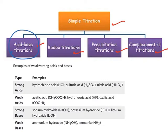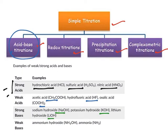When studying acid-base titrations, you need to know about strong acids, weak acids, strong bases, and weak bases. Strong acids include hydrochloric acid, sulfuric acid, and nitric acid. Weak acids include acetic acid, hydrofluoric acid, and oxalic acid. Strong bases include sodium hydroxide, potassium hydroxide, and lithium hydroxide, whereas weak bases include ammonium hydroxide and ammonia.